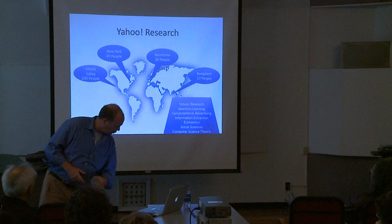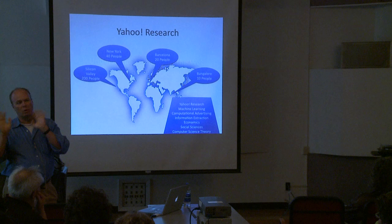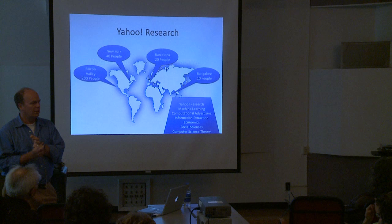Yahoo Research is all over the world. We just opened Beijing, which is not on the slide. There's about 200 people in Silicon Valley. A lot of machine learning, a lot of people doing computational advertising - how do you figure out which ad you put on a webpage and when, and how do you make sure that the advertiser's happy and the user's happy?